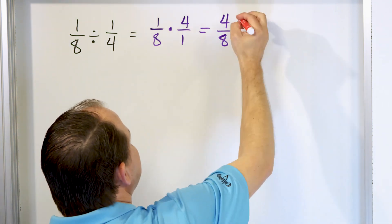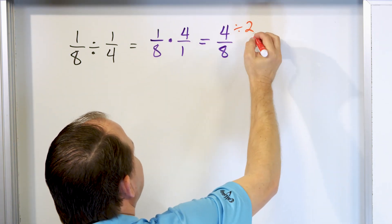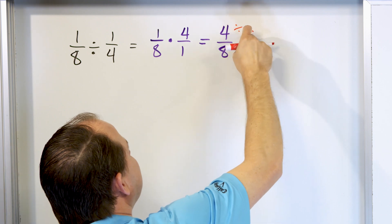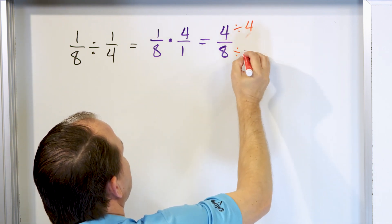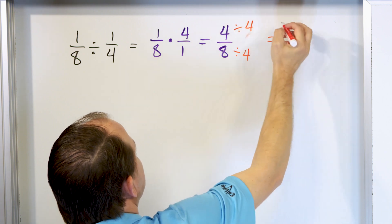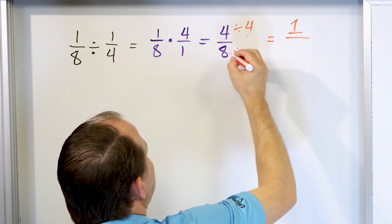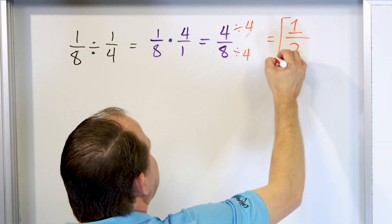Now this can be simplified. I can divide both by 2 if I want to, but I recognize right away that instead of that I just divide the top by 4 and the bottom by 4. 4 divided by 4 is 1. 8 divided by 4 is 2. So I think the answer is 1/2.